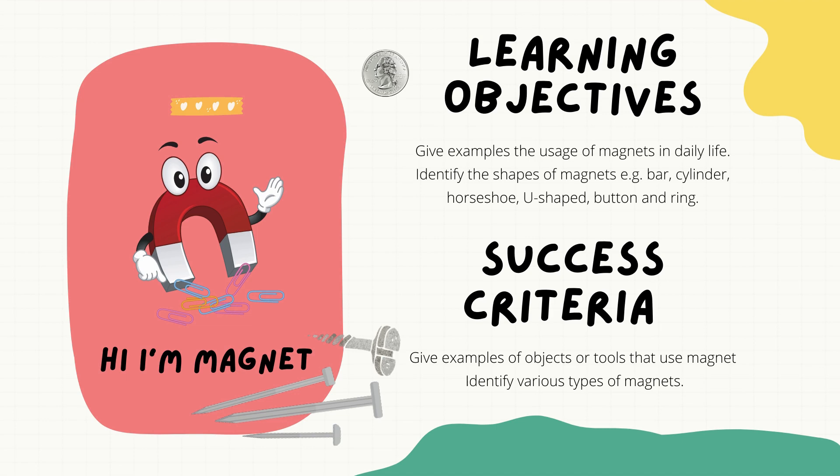The second objective is to identify the shapes of magnets — bar, cylinder, horseshoe, u-shaped, button, and ring. The success criteria for today is to give examples of objects or tools that use magnets, and the second one is to identify the various types of magnets.